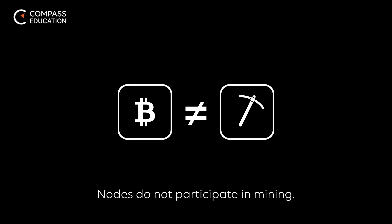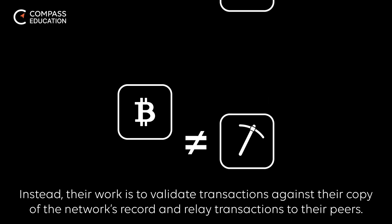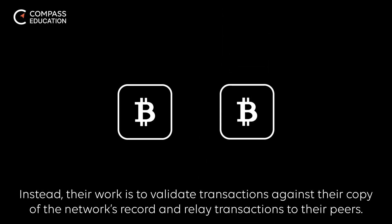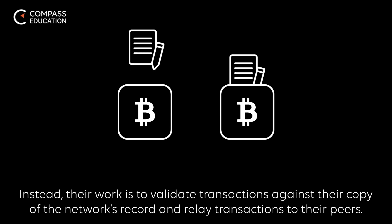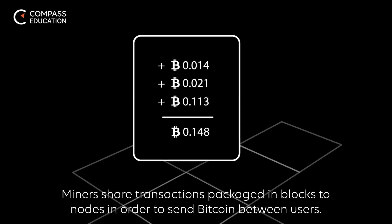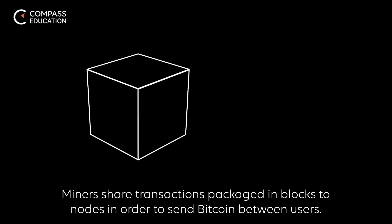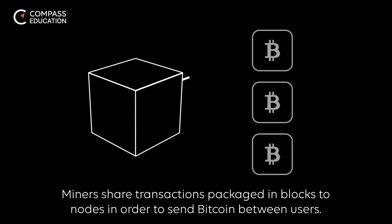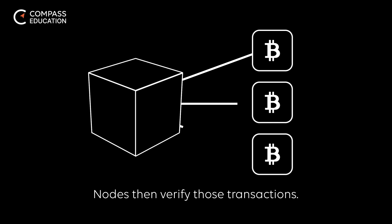Nodes do not participate in mining. Instead, their work is to validate transactions against their copy of the network's record and relay transactions to their peers. Miners share transactions packaged in blocks to nodes in order to send Bitcoin between users. Nodes then verify those transactions.